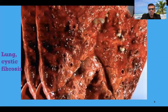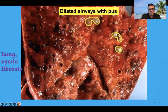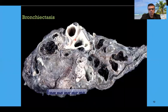Here you can see a lung affected with cystic fibrosis, showing dilated airways filled with pus-like material due to superimposed infections like Pseudomonas and Staph aureus, which are very common in the setting of cystic fibrosis. The prominently and permanently dilated airways are indicative of bronchiectasis.